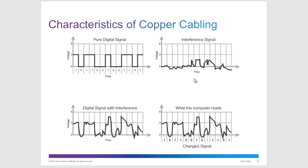There's also something called signal attenuation. Signal attenuation means that the further a signal travels, it deteriorates and becomes more susceptible to interference. Where signal peaks are high initially, the further the signal travels, it deteriorates — and even a little interference can turn a one into a zero if the cable is too long. So signal attenuation means the signal has deteriorated over distance.